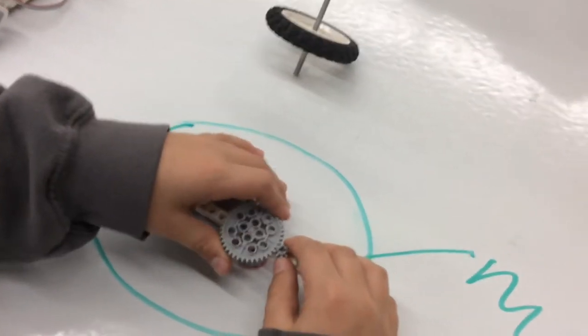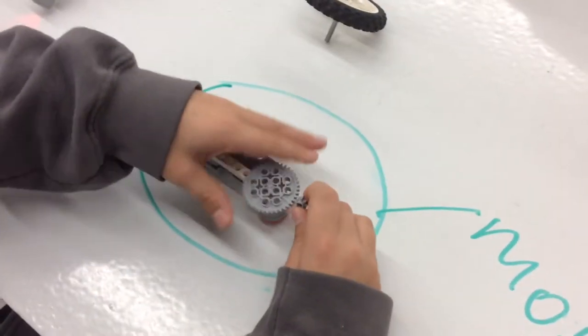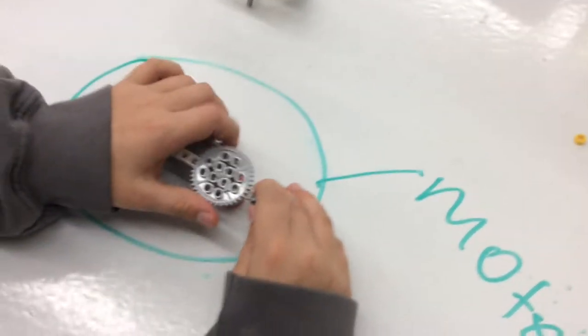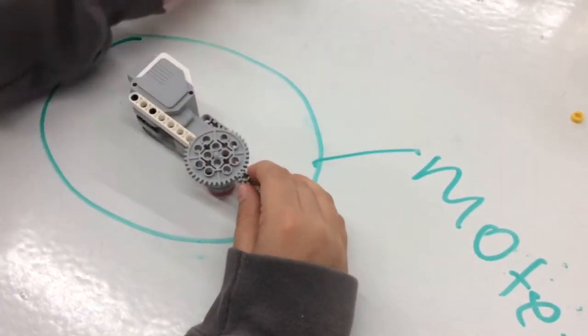So what this input gear does is it spins. And the reason we have a big one is because that just increases the length of the spin. And this small one increases the speed.